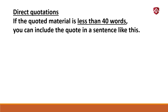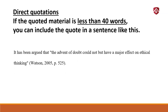Direct quotations. Let's say you use a direct quote exactly as the author said it. If the quoted material is less than 40 words, you can include the quote in a sentence. I've got a statement taken directly from this book. I give Watson, the same book again, 2005, comma. With a direct quote, I'm going to list the page number of where the actual quote came from. Look at where the period is — the period is always after the parentheses.